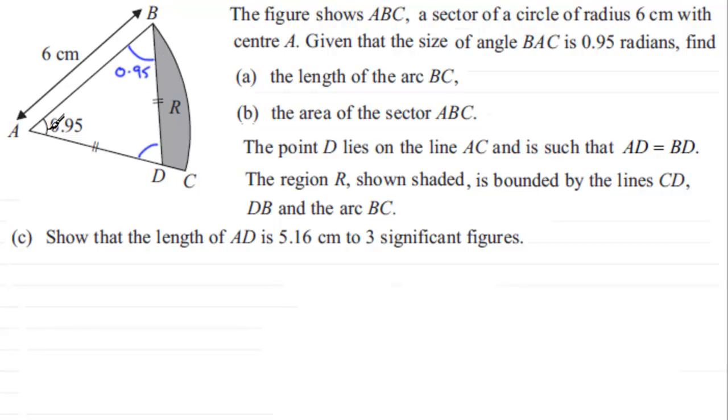So to work out angle ADB, let's just mark it in. Angle ADB then, that angle is going to be the third angle of our triangle and we know normally it would add up to 180 degrees, but we're working in radians so the equivalent in radians is pi radians.